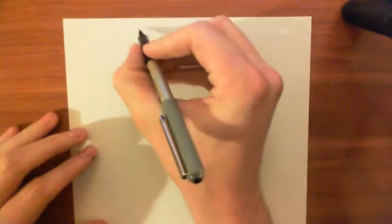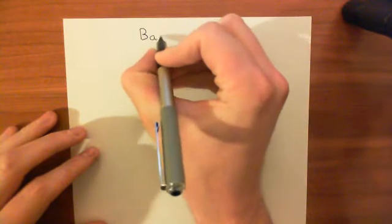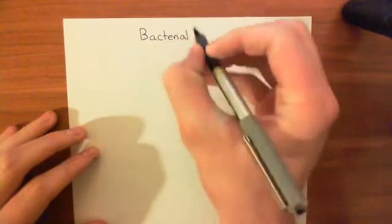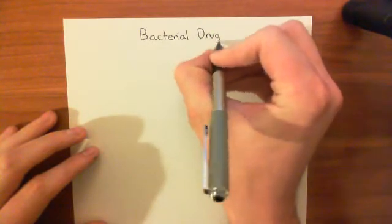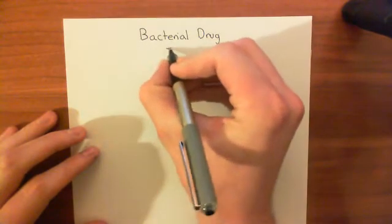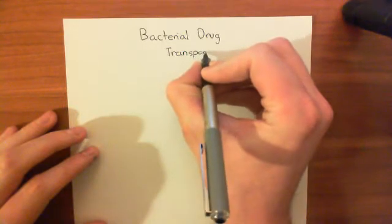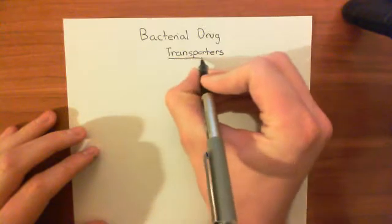Welcome to this next video in the playlist on antibiotics and antibiotic resistance. In this video, what we're going to start looking at is bacterial drug transporters — proteins in the membrane of the bacterial cell which are capable of removing a drug from the cytoplasm of the cell and extruding it into the extracellular fluid.